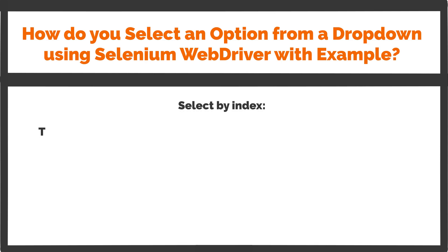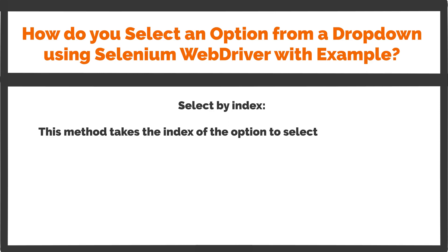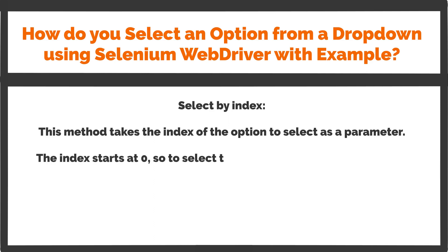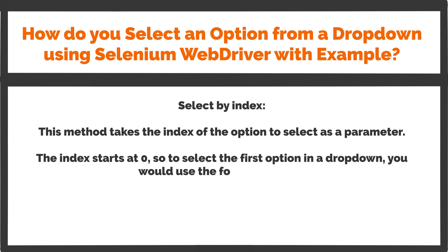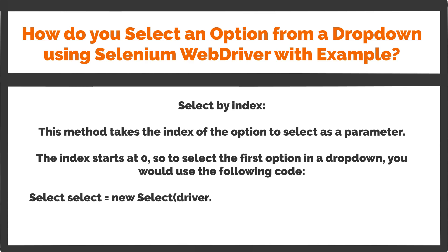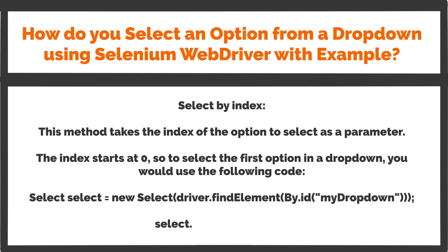Select by Index: This method takes the index of the option to select as a parameter. The index starts at zero, so to select the first option in a drop-down, you would use the following code: Select select = new Select(driver.findElement(By.id("myDropdown"))); select.selectByIndex(0);